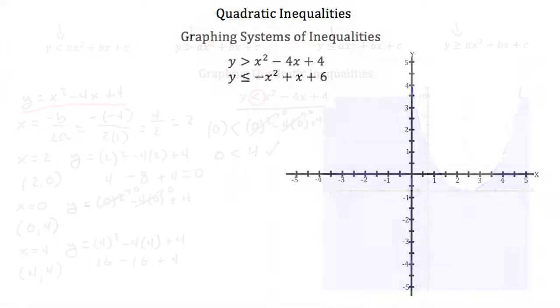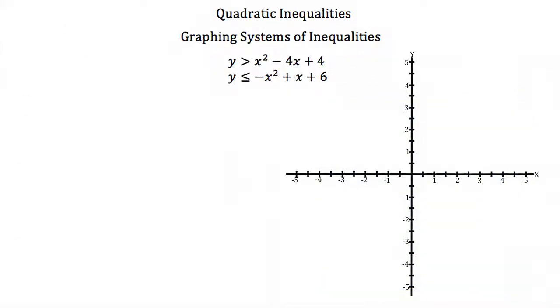So this is the graph of y is less than x squared minus 4x plus 4. Now, what if we wanted to graph a system of inequalities? Here we have two different inequalities: y is greater than x squared minus 4x plus 4, and y is less than or equal to negative x squared plus x plus 6.